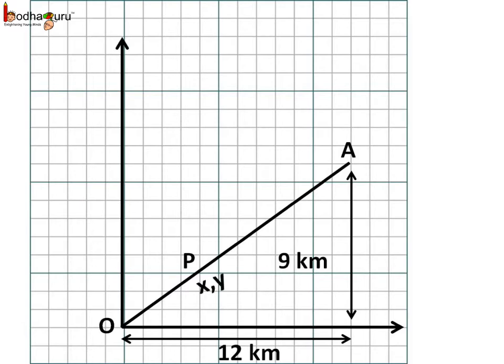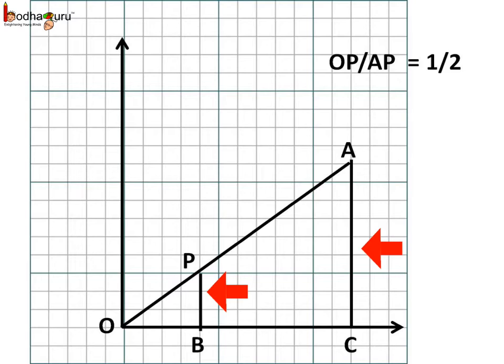We join all the points. AP is twice of OP. So OP by AP is equal to 1 by 2. Now we draw a perpendicular on x axis from P and A. Say they intersect at point B and C.